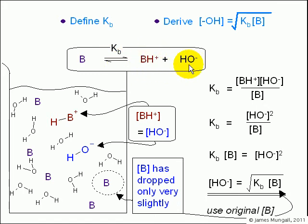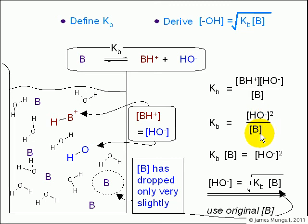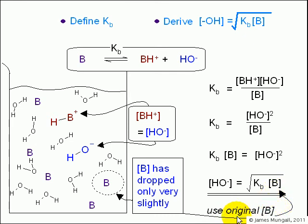If we define Kb, that will be the concentration of products divided by reactants: BH plus times OH minus divided by concentration of B. If we look at the relative amounts of BH plus and OH minus, they will be the same. So we can substitute in place of BH plus another OH minus, giving OH minus squared over the concentration of B. Multiply both sides by B, then switch around and take the square root — this gives the hydroxide concentration as the square root of Kb times the base concentration. We can use the original base concentration if it has dropped only very slightly, which it will have if Kb is quite small, as it usually would be for a weak base.